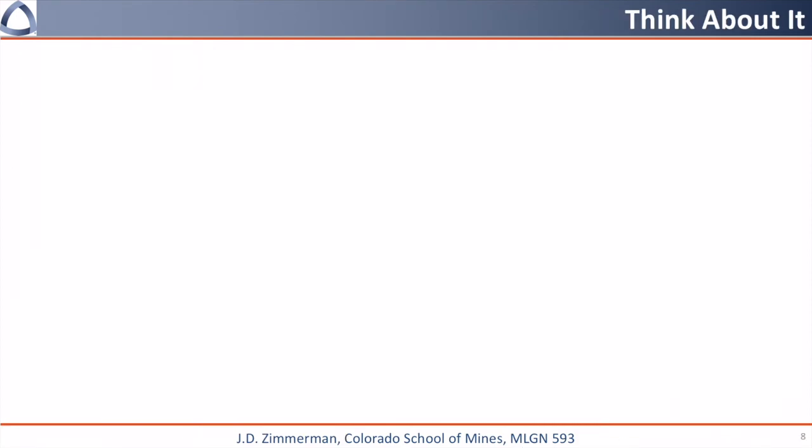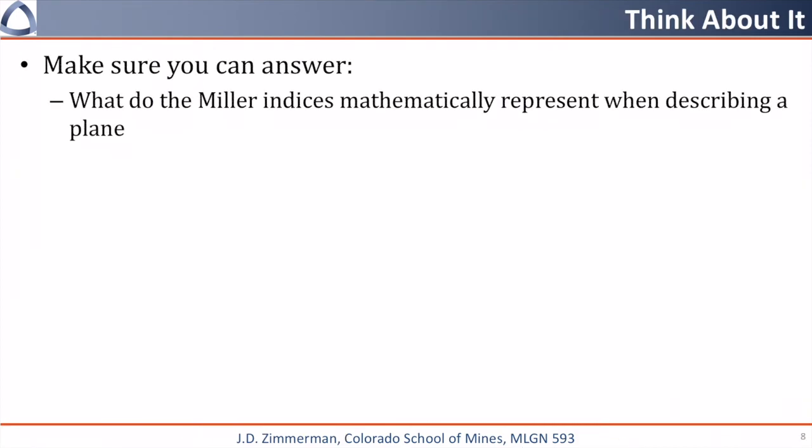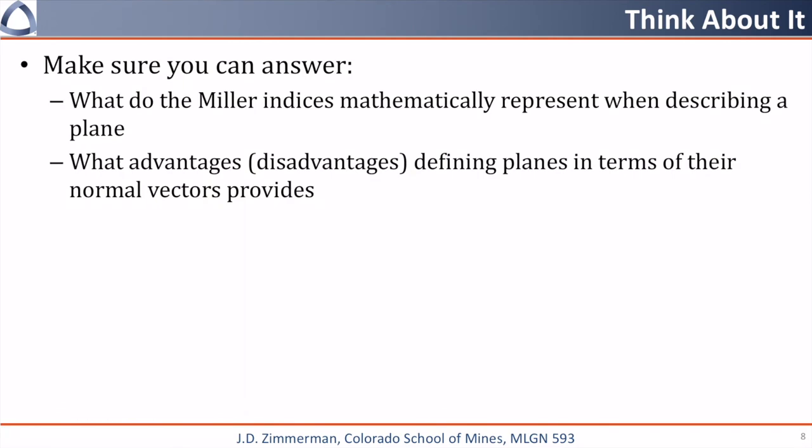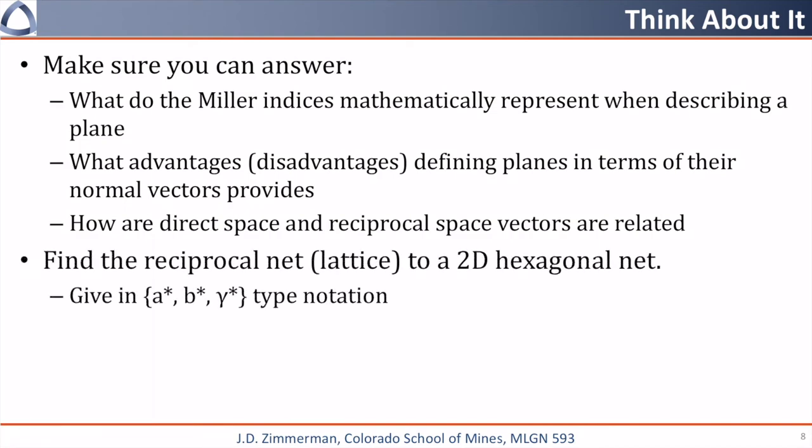I'd like you to make sure you can answer the following questions. What do the Miller indices mathematically represent when describing a plane? What are the advantages or disadvantages of defining planes in terms of their normal vectors? How are direct space and reciprocal space vectors related?